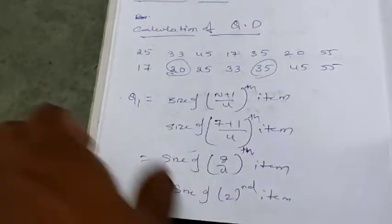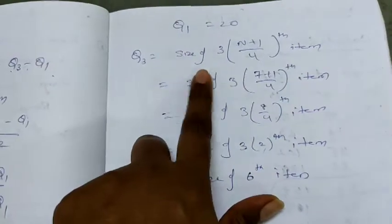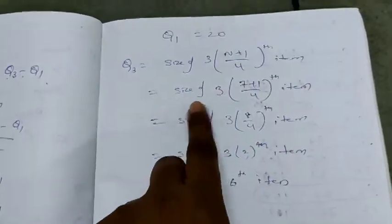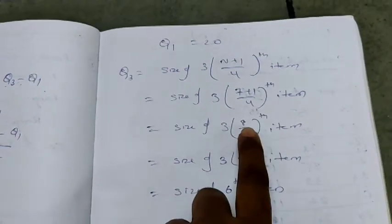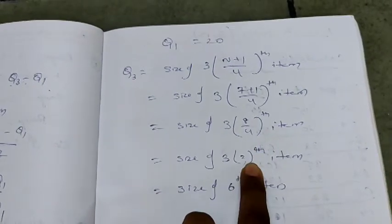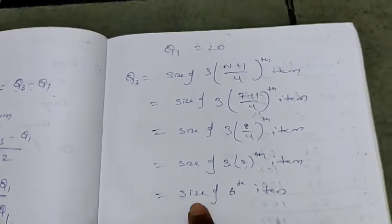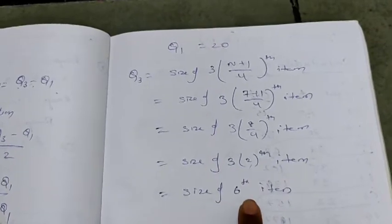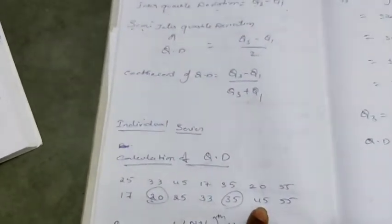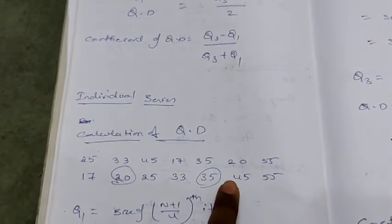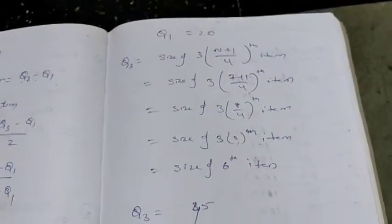Next Q3. For calculating quartile deviation, Q1 is required and Q3 is required. Next Q3, so size of 3 into n plus 1 by fourth item. So size of 3 into 7 plus 1 by fourth item, so 3 into 8 by 4 means 2. So 3 into 2 is 6. So size of 6th item. 6th place is 45. So Q3 is equal to 45.